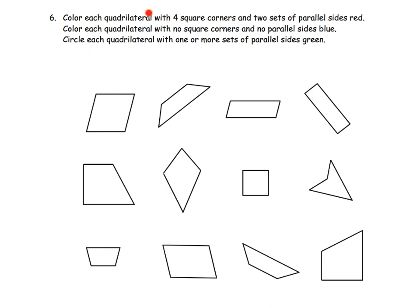The last slide asks us to read and color each quadrilateral that has four square corners and two sets of parallel sides — color those red. So let's see where we have four square corners: here's something with four square corners, and here's something with four square corners. This one has two square corners, and this one also has only two square corners. So we want four square corners and two sets of parallel sides — that's this shape and this shape. Let's color those red.